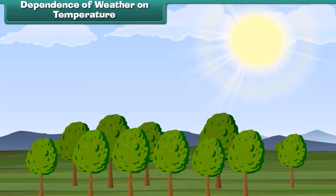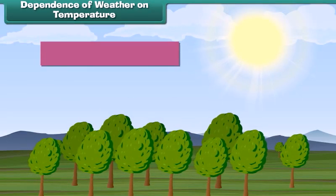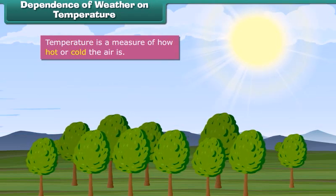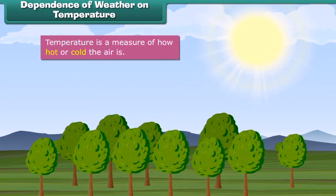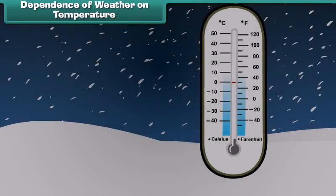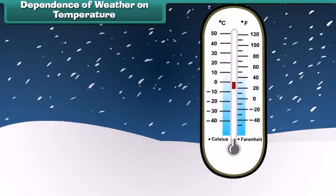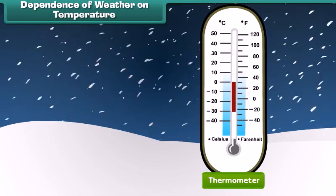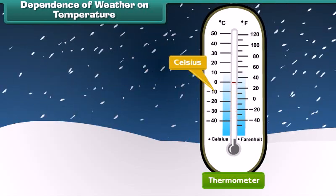Temperature is a measure of how hot or cold the air is. It depends upon the energy it receives from the sun. Temperature is measured with the help of a device called a thermometer and it is calculated in degrees Celsius and degrees Fahrenheit.